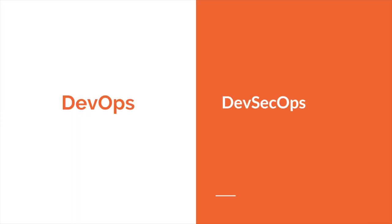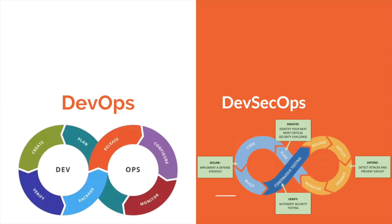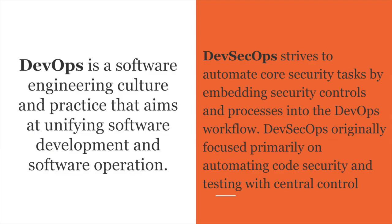Basically, DevOps integrates all the processes of development and deployment. DevSecOps covers the same development and deployment process integration, but it also integrates security operations into all development processes and development activities.